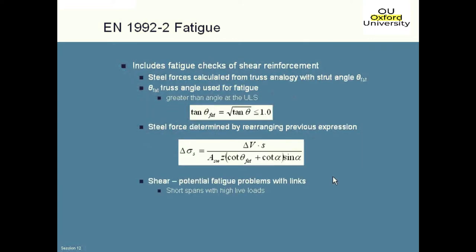The Eurocode, as well as requiring checks on bars in general for flexure, also requires us to check fatigue in shear links, which is new. The way we do that is to turn around the ultimate limit state formula for designing the links and reverse it. So for a given shear range, we can work out a stress range in the reinforcement, and we need a truss angle to use in that calculation. The Eurocode says whatever truss angle theta you use at the ultimate limit state, we need to define theta_fat — an angle used for the fatigue calculations.